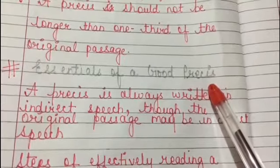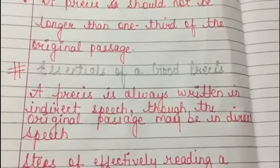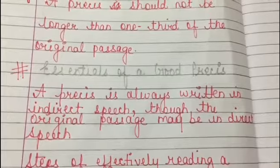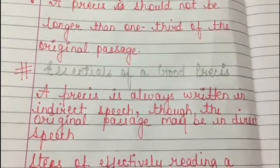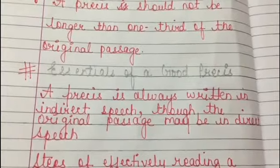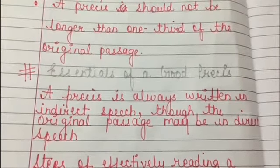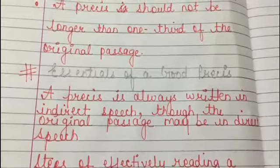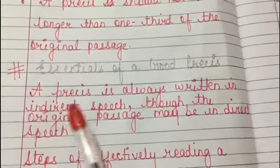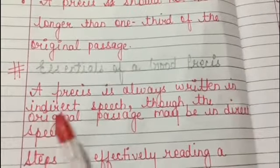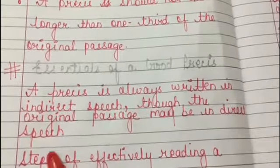The essentials of a good précis are: one should have a clear understanding of the passage. It should be complete, containing all essential thoughts, ideas, or facts in a condensed form. It should not contain opinions or observations not expressed by the writer in the original passage. Also, a précis is always written in indirect speech, even if the original passage is in direct speech.